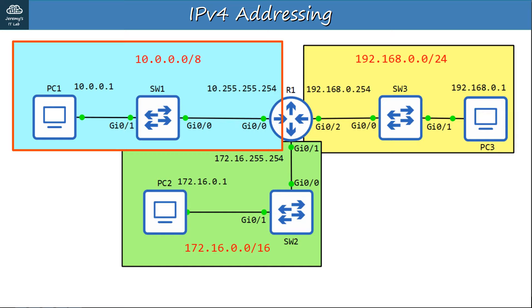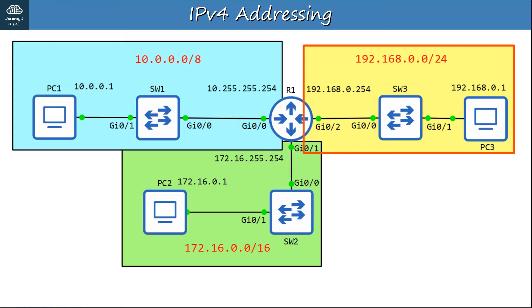We have one class A network, 10.0.0.0/8. PC1 has the first usable address, 10.0.0.1, and we will assign the last usable address, 10.255.255.254, to R1's GigabitEthernet0/0 interface. We have this class B network, 172.16.0.0/16. PC2 has the first usable IP address, 172.16.0.1, and we will assign the last usable address, 172.16.255.254, to R1's GigabitEthernet0/1 interface. We also have a class C network, 192.168.0.0/24. PC3 has the first usable address, 192.168.0.1, and we will assign the last usable address, 192.168.0.254, to R1's GigabitEthernet0/2 interface.